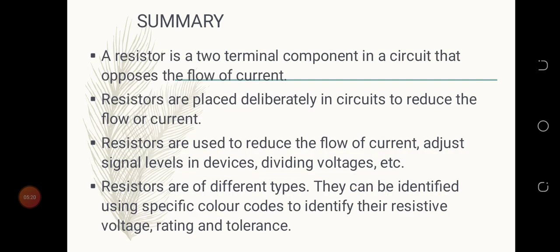In summary: a resistor is a two-terminal component in a circuit that opposes the flow of current. Resistors are placed deliberately in circuits to reduce the flow of current. Resistors are used to reduce the flow of current, adjust signal levels in devices, divide voltage, etc. Resistors are of different types and can be identified using specific color codes to identify their resistive voltage rating and tolerance.